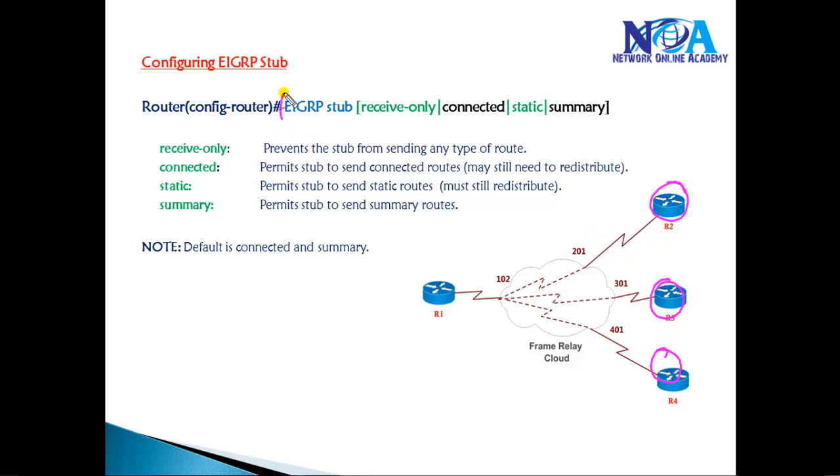We simply say EIGRP stub. That is the only command, but optionally you have parameters like receive-only. In case of receive-only, it will only receive the routes but it will not send back any route advertisements.